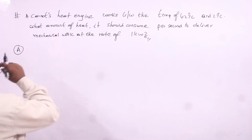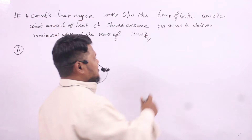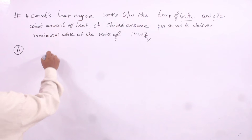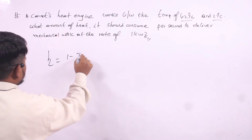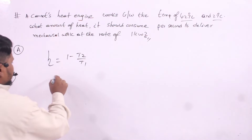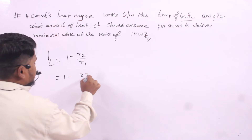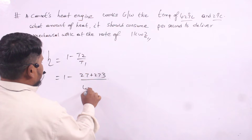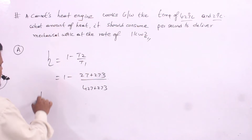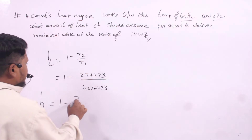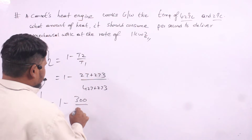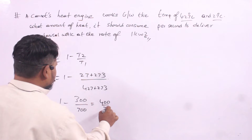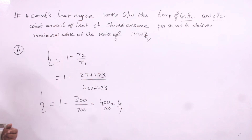Next problem: a Carnot engine works between temperatures of 427°C and 27°C. First we calculate efficiency: 1 minus T2 divided by T1, which is 1 minus (27 + 273) divided by (427 + 273), giving 1 minus 300 divided by 700, which is 400 divided by 700, or 4 by 7. This is the efficiency of the heat engine.